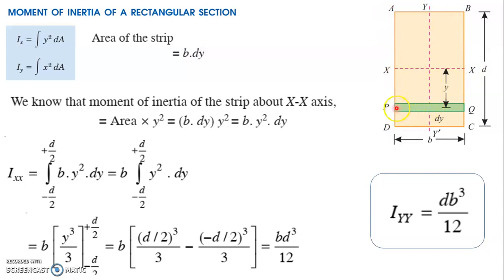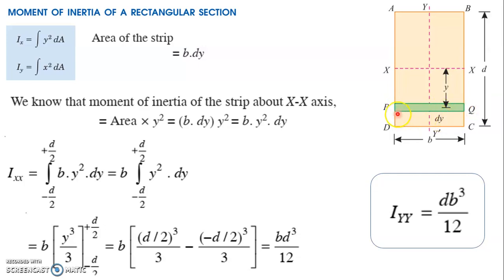For the derivation, we consider a small section marked in green at a distance y from the x-axis. I will derive the equation for IXX, the moment of inertia with respect to the x-axis. The equation is IXX = ∫y² dA. The width of the small section is dy and the breadth is b, so the area of the small section equals b · dy, and the distance from the x-axis is y.